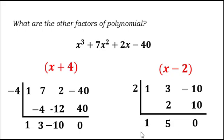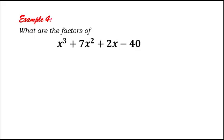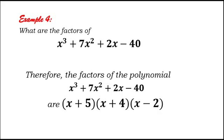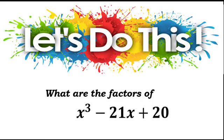The quotient from this synthetic division is x plus 5, which is the factor we found earlier using the Remainder Theorem. Therefore, the factors of x cubed plus 7x squared plus 2x minus 40 are quantity x plus 5 times quantity x plus 4 times quantity x minus 2. Next: What are the factors of x cubed minus 21x plus 20?